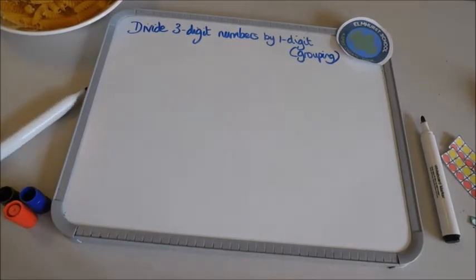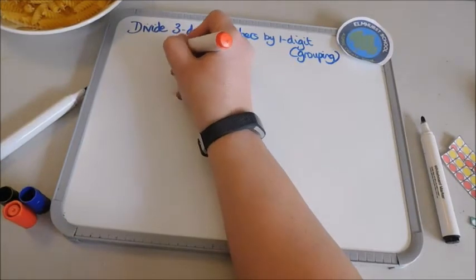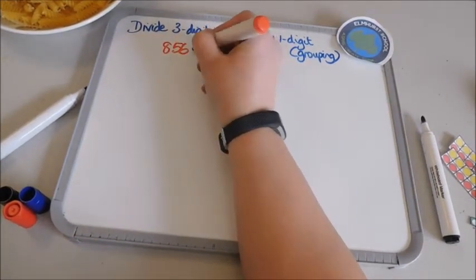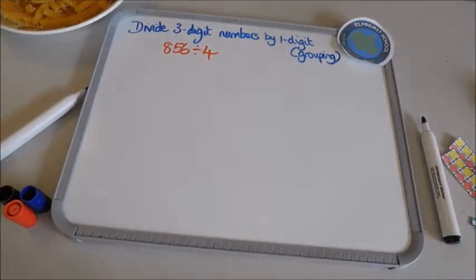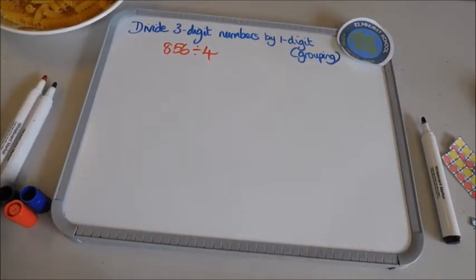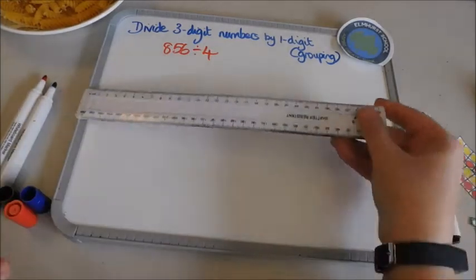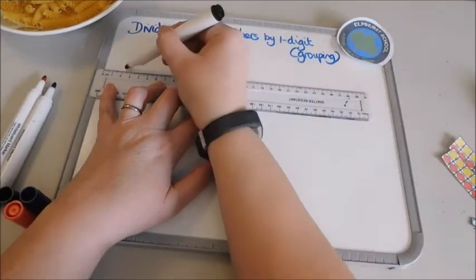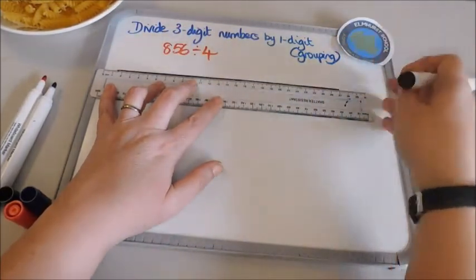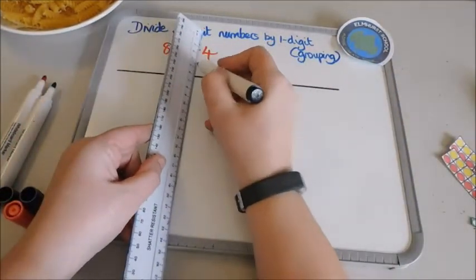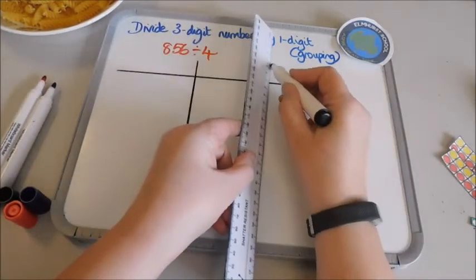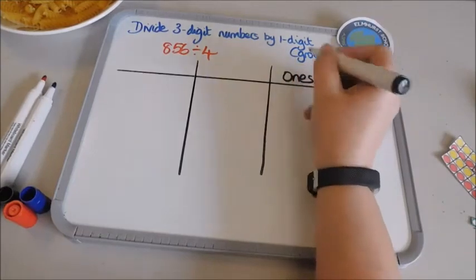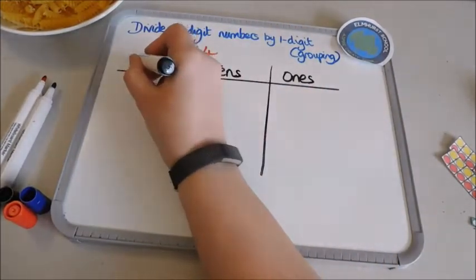So the calculation that I'm going to be doing is 856 divided by 4. I'm going to draw my place value counters on my place value grid. So I've got my hundreds and I've got my tens and I've got my ones.